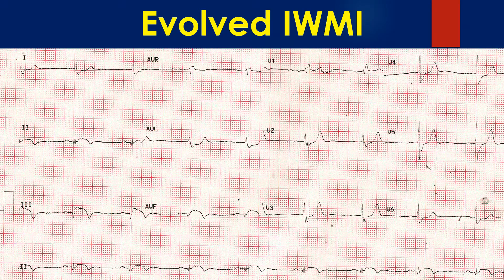PR interval is 200 ms, which is the upper limit of normal. AV blocks are also quite common in inferior wall infarction, as the right coronary occlusion — which is often the cause of inferior wall infarction — also impairs the AV nodal blood supply.